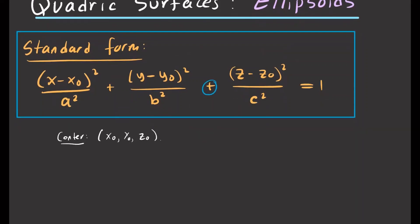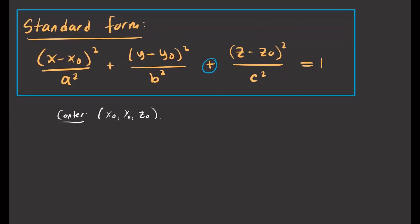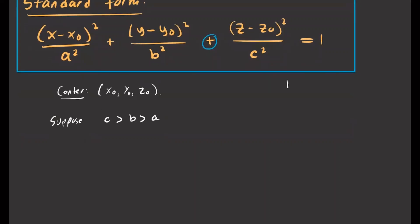Now let's look at the general shape. We're going to suppose that c is greater than b and b is greater than a, so that the ellipsoid is elongated along the z-axis since c is greatest. Here's how it's going to look — just a basic shape that we can then shift.